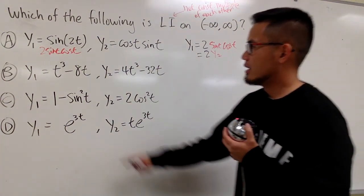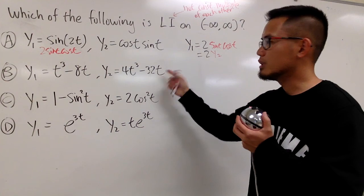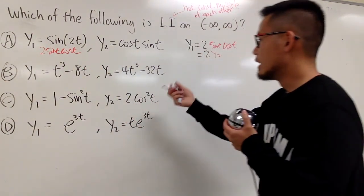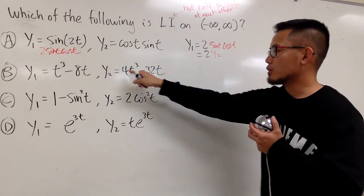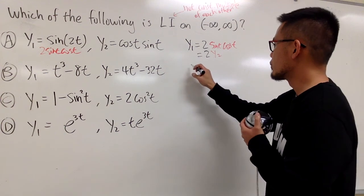How about the next one? I have t cubed minus 8t and this is 4t cubed minus 32t. All I have to do is multiply this by 4, or maybe look at this way. I can multiply this by a quarter. I will show you real quick though.